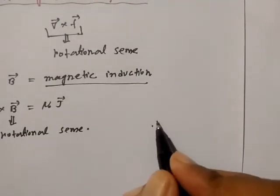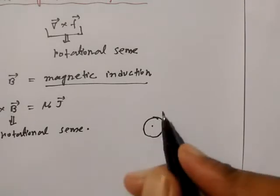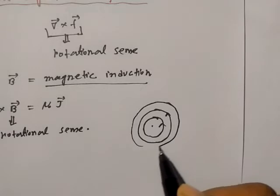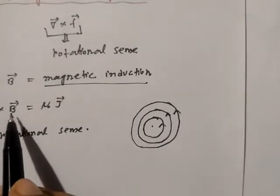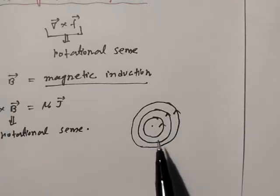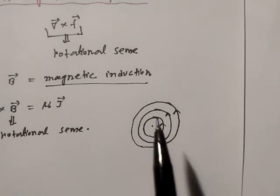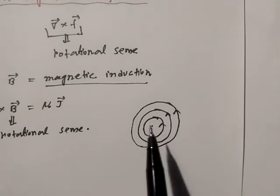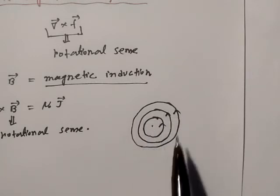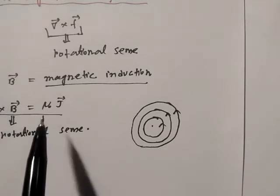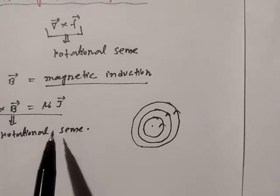This type of rotational sense we find for the magnetic field B. We know the magnetic field lines for a current-carrying conductor — for an infinite long current conductor like this, if there is a current-carrying conductor perpendicular to this plane, then the magnetic field lines are circular. So the magnetic field has a rotational sense, which proves Ampere's theorem.